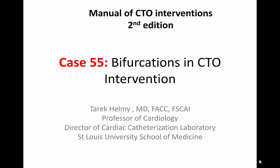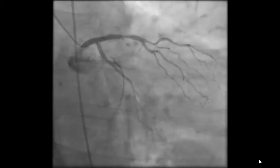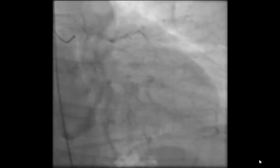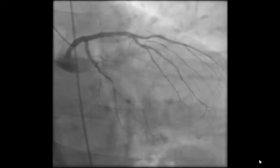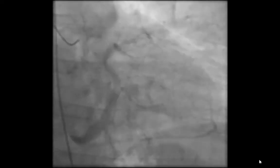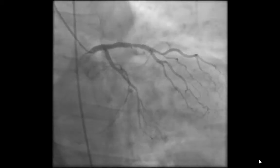Thank you, Manos. We're going to talk about a complex situation where the CTO is right at the bifurcation and the proximal cap is right at the bifurcation point with very little purchase on the occluded vessel and a large side branch — in this case a large diagonal — that will create the path of least resistance for the wire to go through, thus creating a significant challenge to actually penetrate the proximal cap of the occluded LAD.